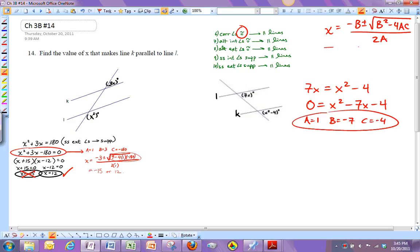And so if I plug into my quadratic formula, I'm going to get X equals negative negative 7, so positive 7 plus or minus the square root of B squared. So negative 7 squared minus 4AC all over 2A.